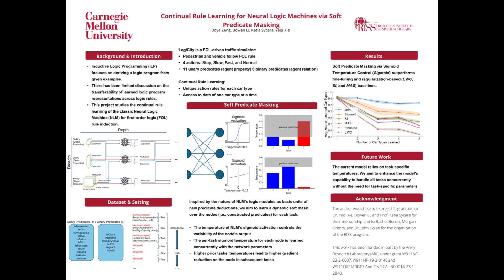In Logic City, we have five car types: ambulance, bus, police, tire road, and reckless cars. We craft a unique set of rules for each car type, and the model is given data for only a single car type at a time. The goal is to ensure that after the model learns these car types, or tasks, sequentially, it would at the end be able to correctly predict the actions for all car types.